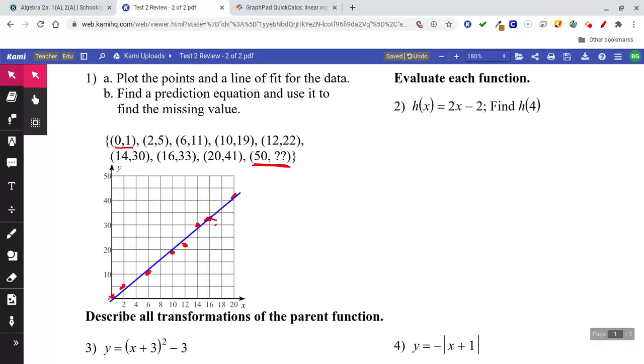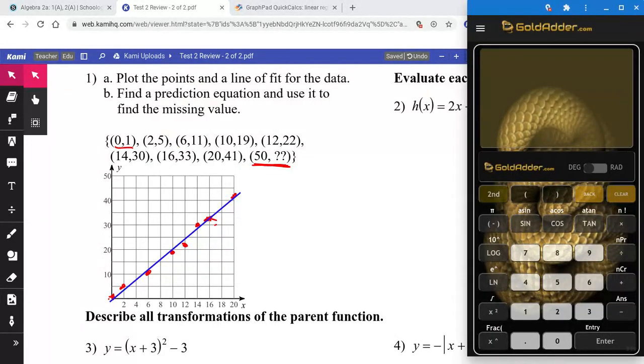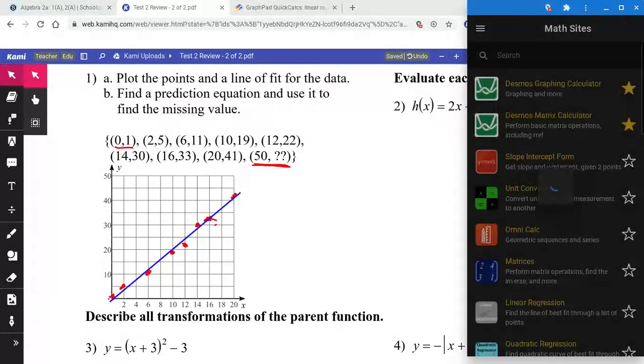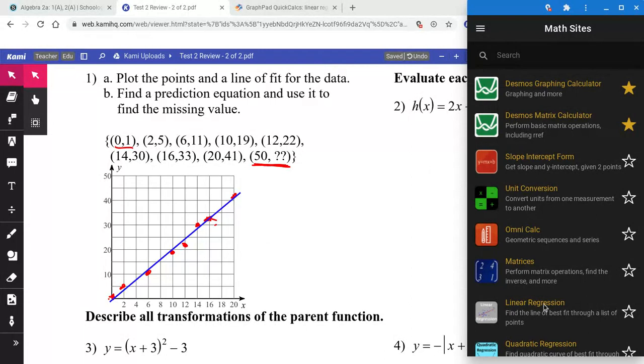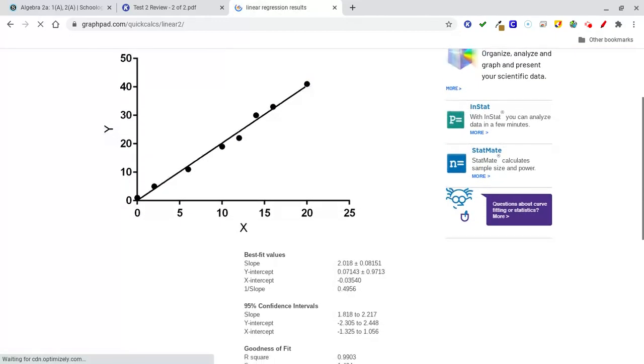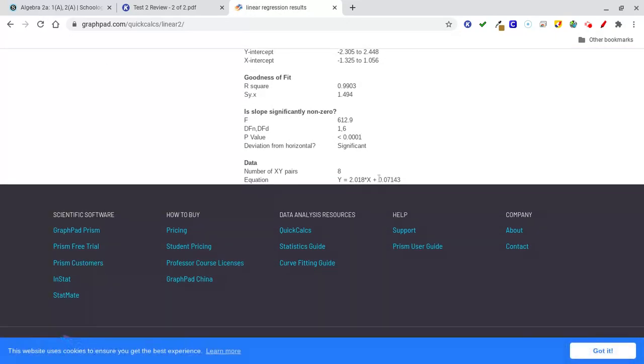Part B says find a prediction equation and use it to find the missing value. So the way we did it was we went to Gold Adder and the math sites, and then we went to the site that says linear regression. Click that, it's going to take you here. Enter in all the data into this table and hit calculate. When you scroll down, you're going to see the equation right here: 2.018x plus 0.07143.